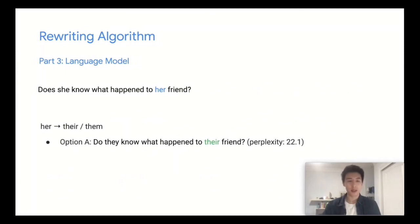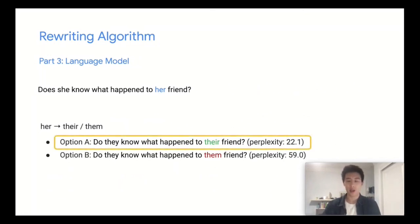For instance, we have, do they know what happened to their friend, versus do they know what happened to them friend. Here, option A has a lower perplexity, and we choose that option. So we rewrite the word her to be their.